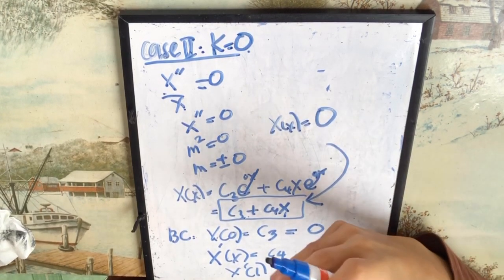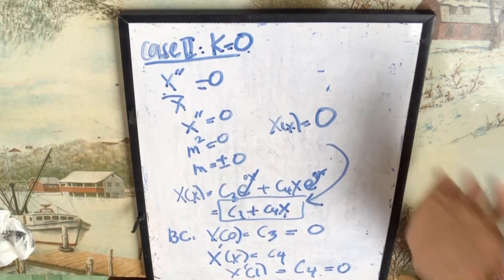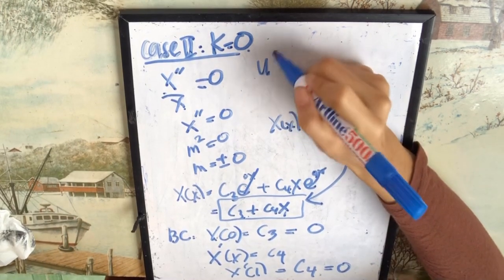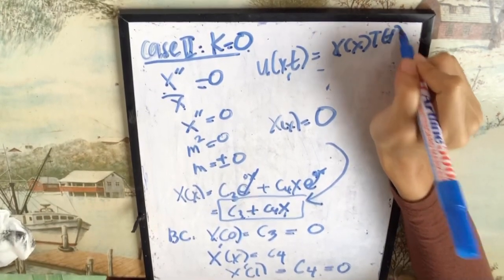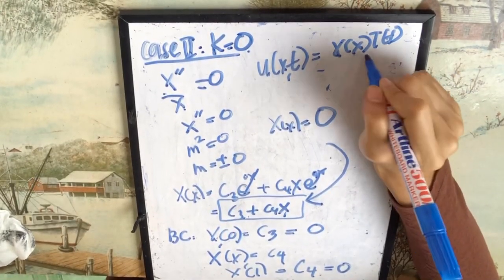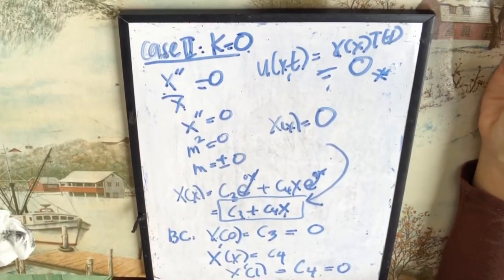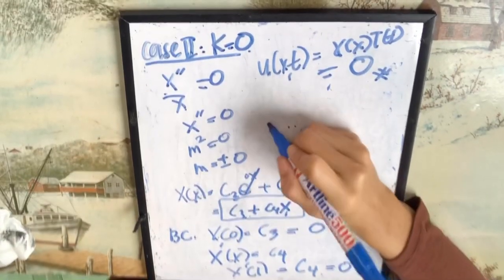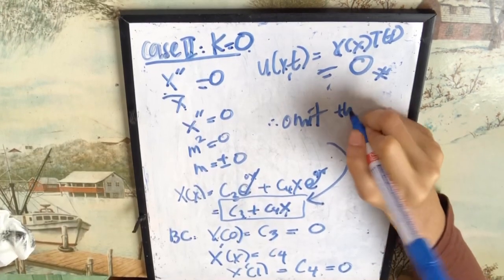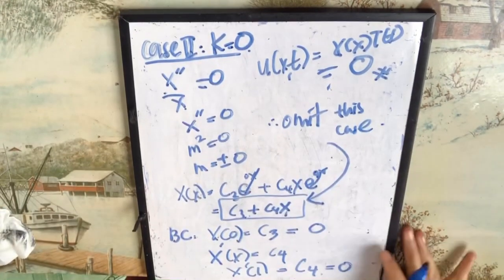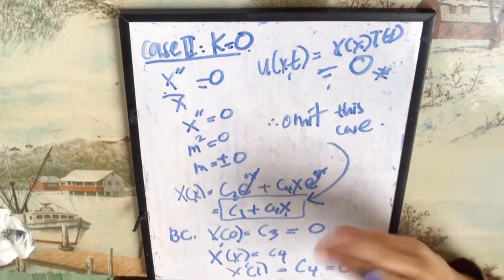So it's similar like the previous cases, case number 1. So you don't need to proceed with your t equation. Because your final answer later on for case number 2, you will multiply x and t equation. So now you already get your x equation to 0. So therefore your case number 2 also equal to 0. So what we can say for this case, same like the previous cases, we will omit this case. You don't need to proceed with t equation and so on. Just omit this case and then we will proceed to case number 3.